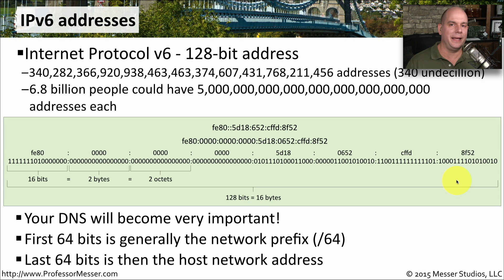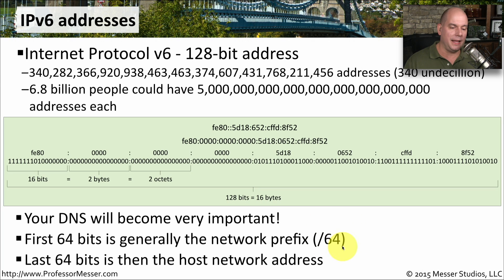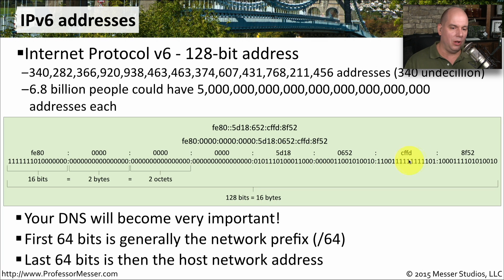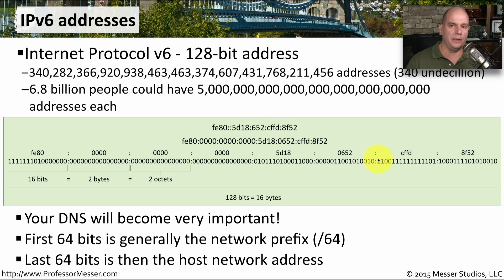We don't generally do a lot of subnetting in IPv6 because we have so many addresses available. There's really no need to separate it into smaller pieces to conserve address space like we did with IPv4. Because of that, you'll generally see IPv6 addresses with a 64-bit subnet mask — written as slash 64. That means the first 64 bits are the network address, and then you have all 64 bits after that to use as host addresses, keeping it very simple.